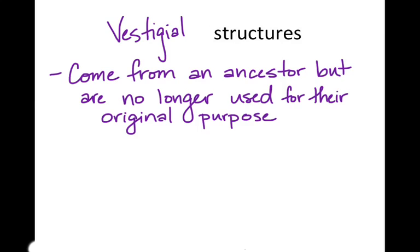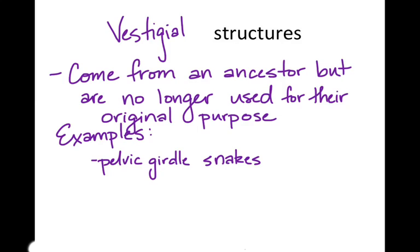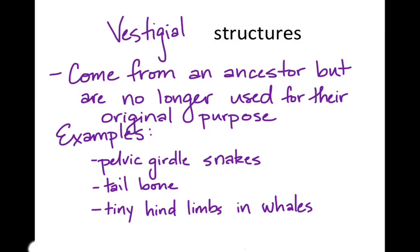Vestigial structures are structures that seem to have no purpose anymore but are evidence that they were present in an ancestor. Examples include snakes that have remnants of a pelvic girdle, indicating their ancestors had legs; the tailbone in humans; tiny hind limbs and remnants of a pelvis in whales, indicating they once came from creatures that walked on land; and wings in ostriches, which are used for balance but not for flying.